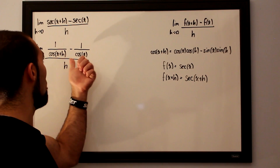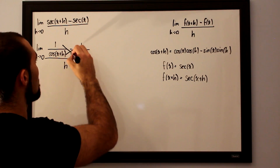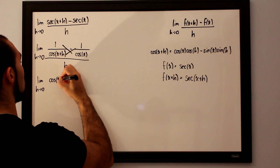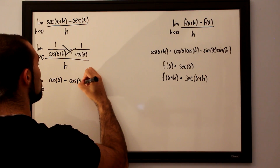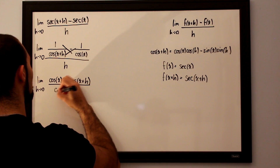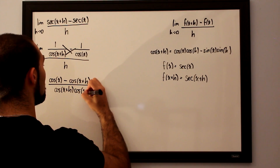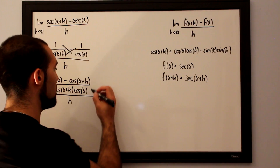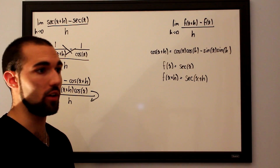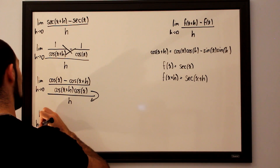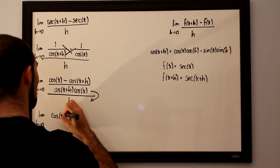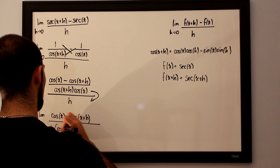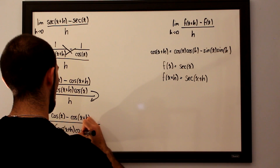Now we'd like to join these under a common denominator. We multiply by cosine of x plus h on the first term and cosine of x on the second term. The numerator becomes cosine of x minus cosine of x plus h, divided by cosine of x plus h multiplied by cosine of x, all divided by h. We then drag the denominator of the numerator straight into the denominator to clean things up.